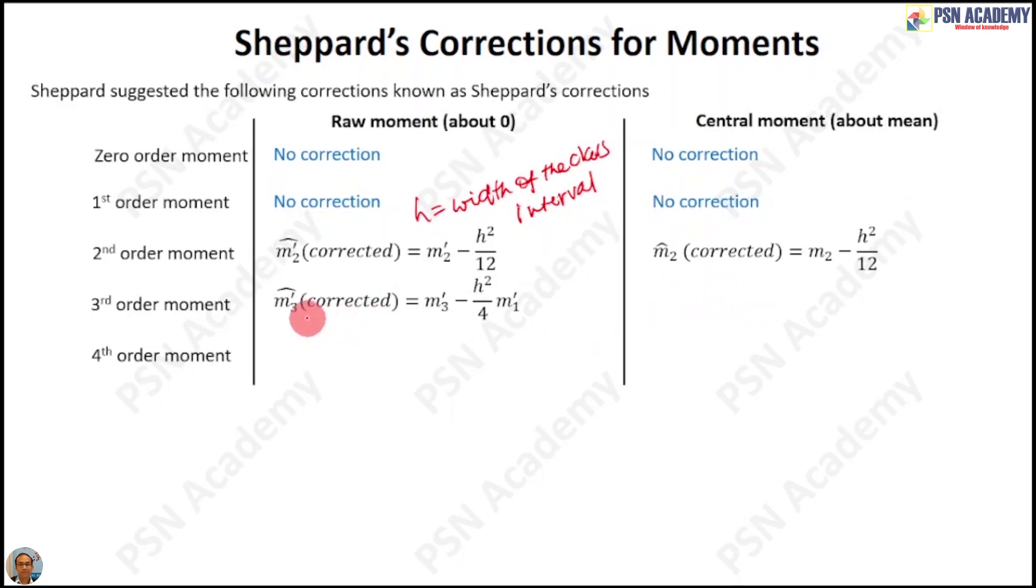The same thing goes with the central moment also. In the third order moment, you have a correction like this - this is your computed third order moment. On the other side, you have no correction at all. In the fourth order moment, you have a correction: your computed fourth order moment minus h² by 2 times computed second order moment plus 7 by 240 times h⁴. The same formula goes with the central moment in case of fourth order moment.